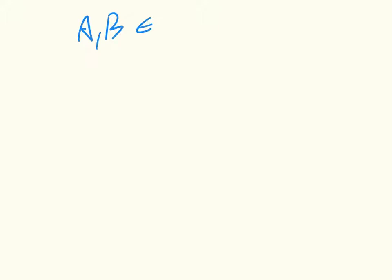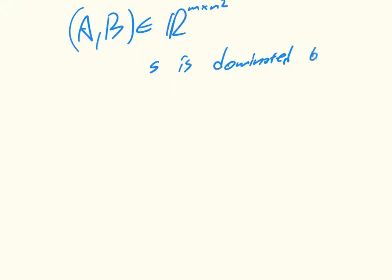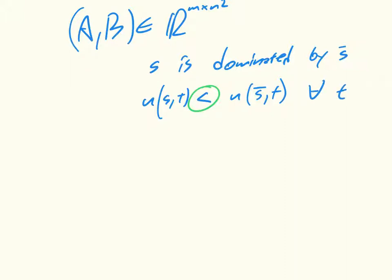For a given normal form game, a b — we're going to get used to this notation now — a b in R^(m×n²), we can identify a particular strategy that is going to be dominated by another strategy. The definition is that s is dominated by s-bar if the utility of s against t is strictly less than the utility of s-bar against t for all t — that is, for all strategies of the opponent.